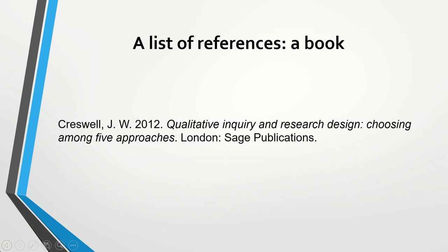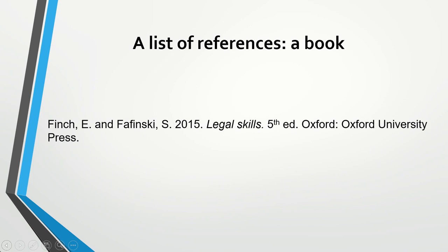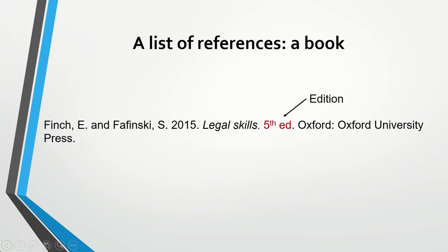If you reference a book, again we have the author's name and initial, year of publication, then the book title, a place of publication, and the publisher. If the book has several editions, you also need to provide the edition number.